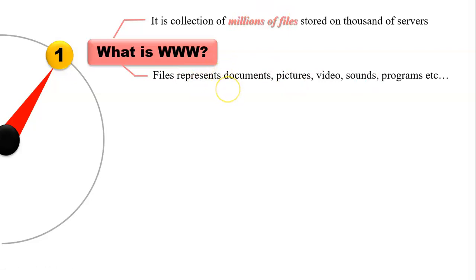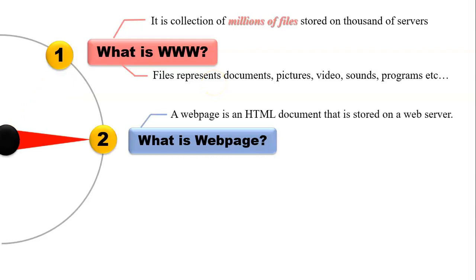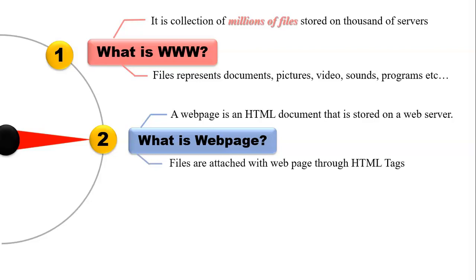How can we access files from the World Wide Web? You can access files from the World Wide Web through a web page. A web page is a kind of HTML document that is stored on web servers. Files are attached with the web page through HTML text. So the next question is: how can we access the web page from the World Wide Web?